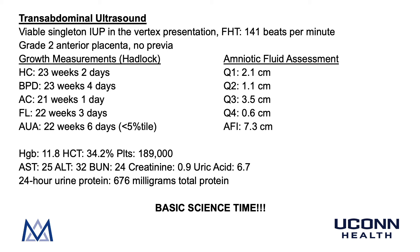Her hemoglobin is 11.8, hematocrit 34.2, and platelet count 189,000. Her AST and ALT are both normal. Her BUN, creatinine, and uric acid are also normal. A 24-hour urine protein collection reveals 676 milligrams of total protein. Adding up her severe-range blood pressures, this degree of proteinuria, and growth restriction of the fetus, you would diagnose S.J. with severe preeclampsia, or preeclampsia with severe features.